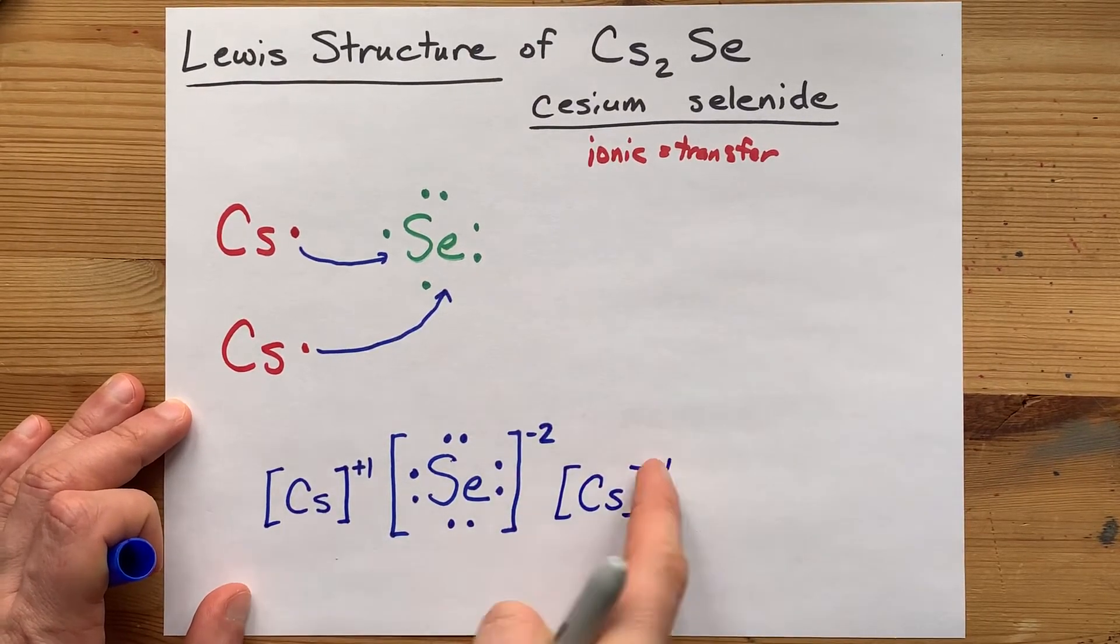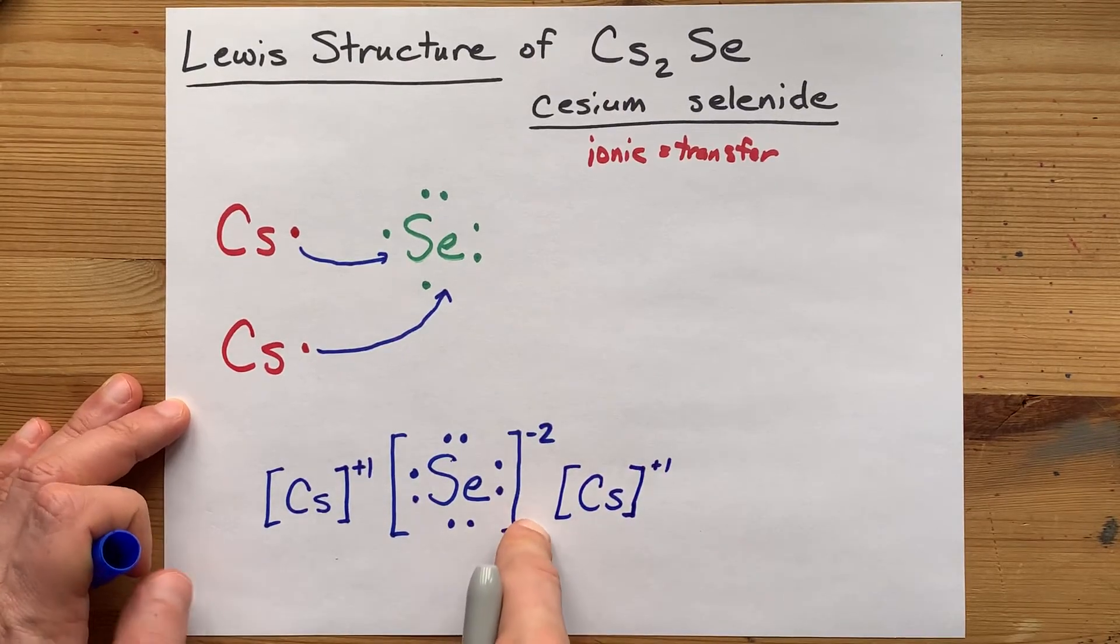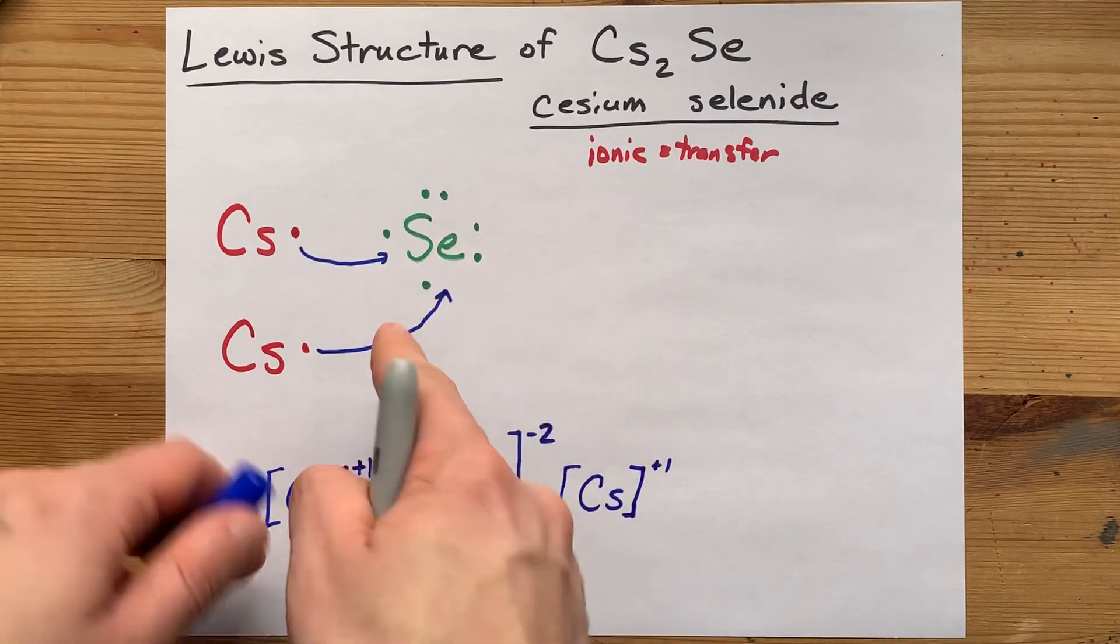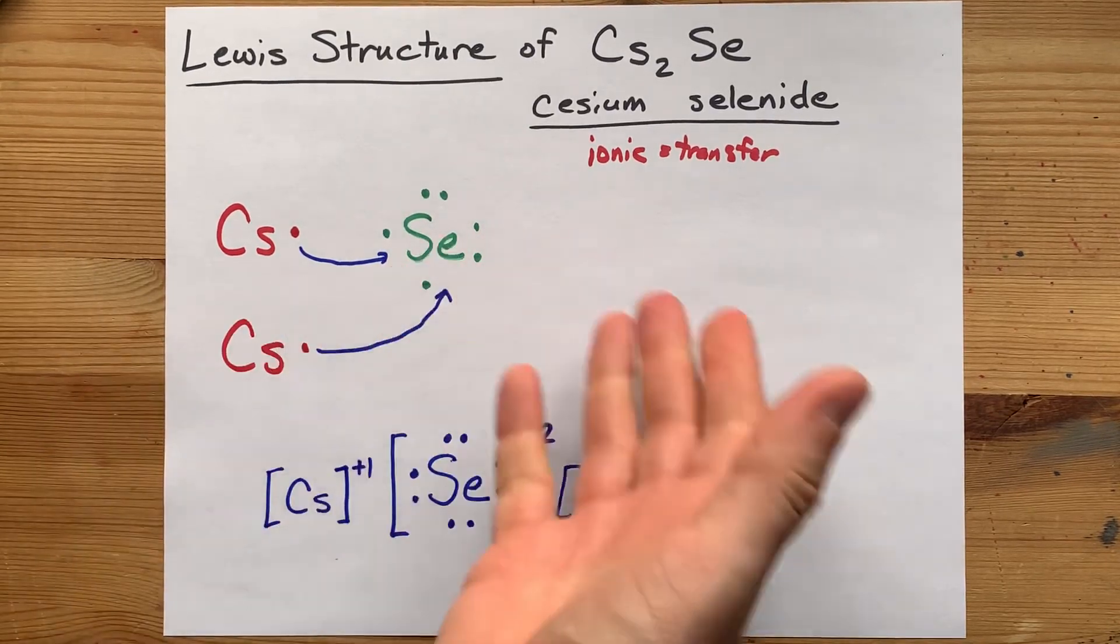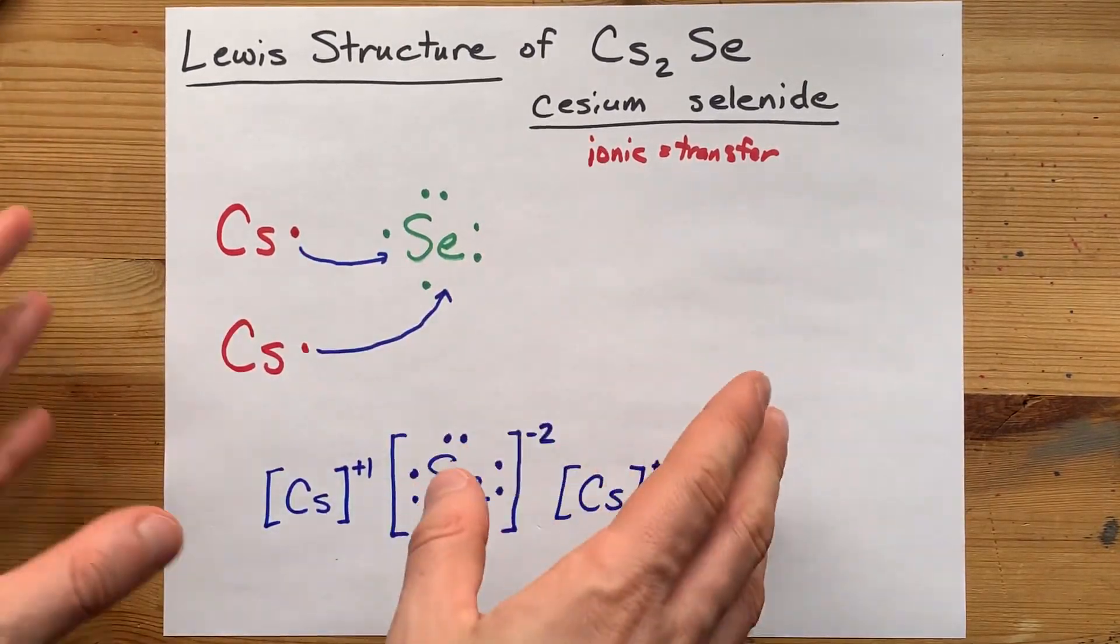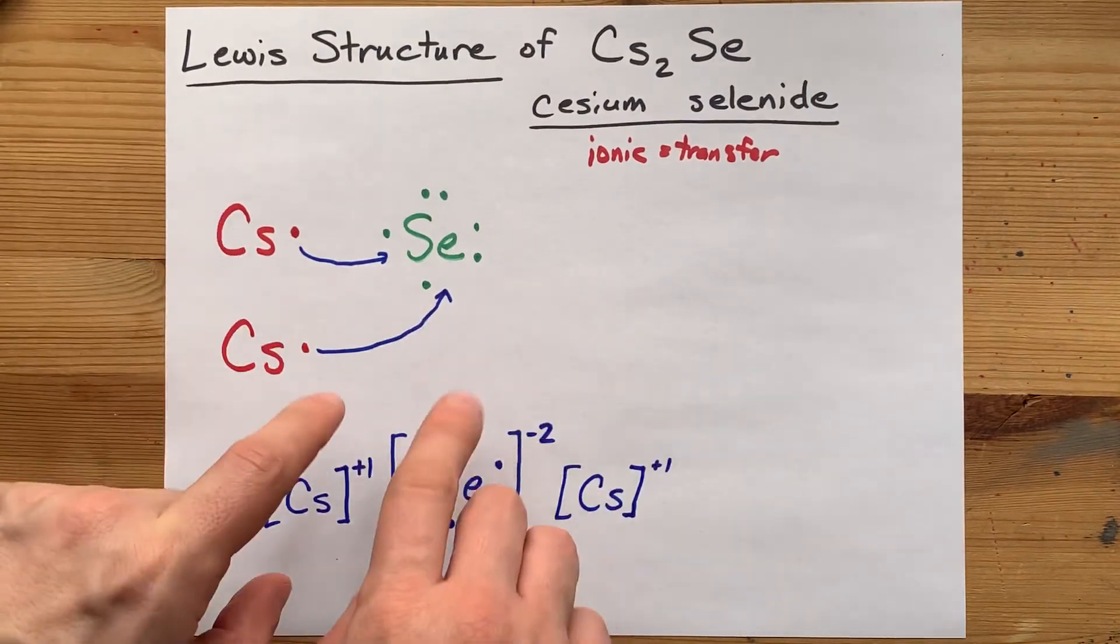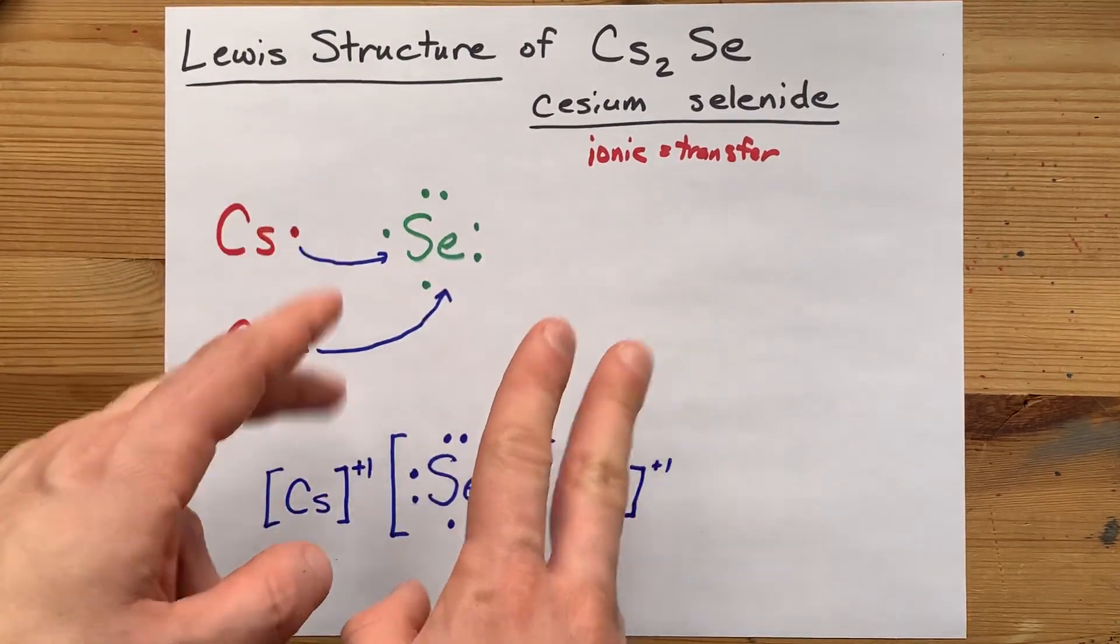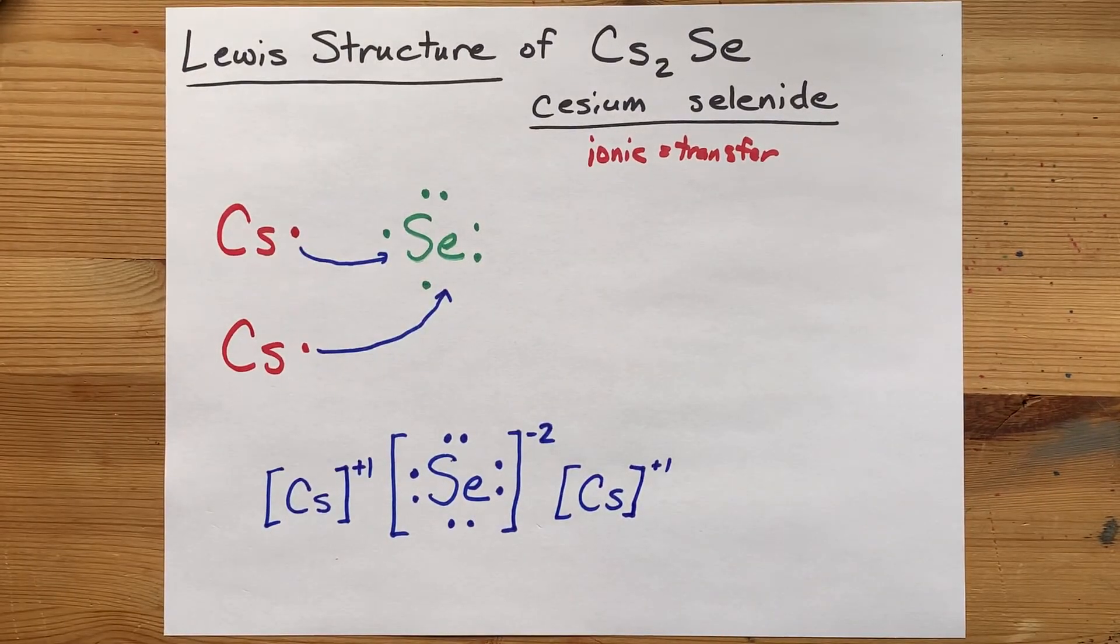And there you go. This is the completed Lewis structure for cesium selenide. This is you showing the transfer of electrons. Not too bad. You can draw all ionic Lewis structures in this way as long as you know how many electrons are on the metals and non-metals to start with. Beautiful. Best of luck.